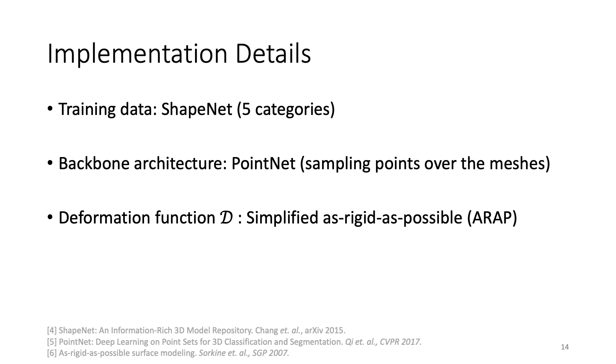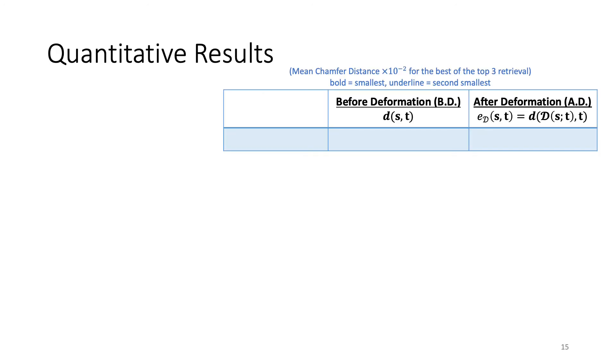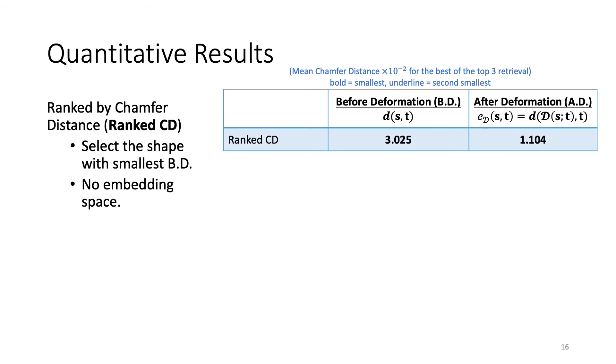For our quantitative experiments, the goal is to achieve small chamfer distances after deformation, denoted by AD, which is equivalent to our fitting gap. We also show the chamfer distance before deformation, denoted by BD for reference. Our first baseline is ranked by chamfer distance, where we retrieve shapes sorted by the distance before deformation, BD. Here, we have to exhaustively compute for the pairwise chamfer distances between the shapes, as there is no embedding space.